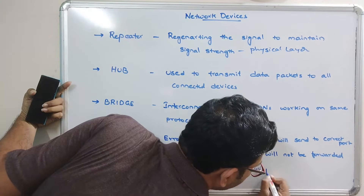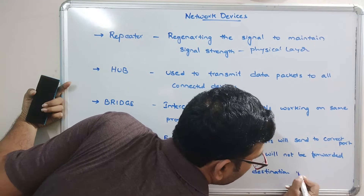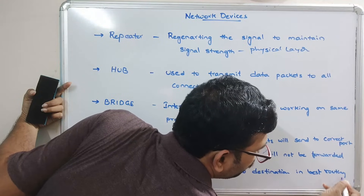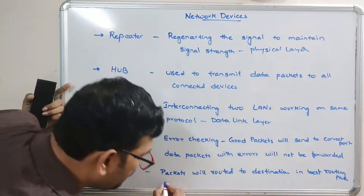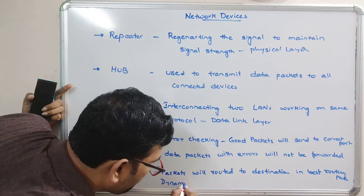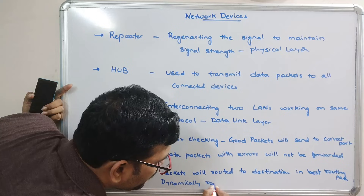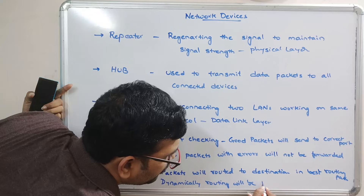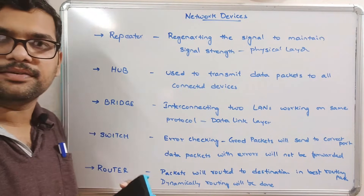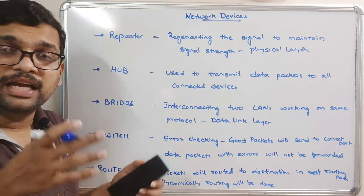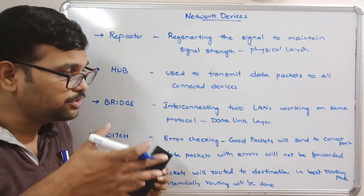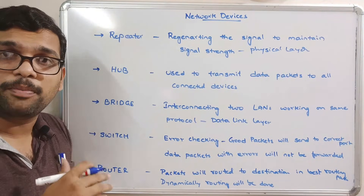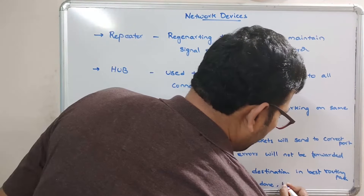Packets are routed to destinations via the best routing path. The routing is decided dynamically — it can change from one packet to another packet. The router selects the best path, and the routing is done through that best path. The router operates in the network layer.